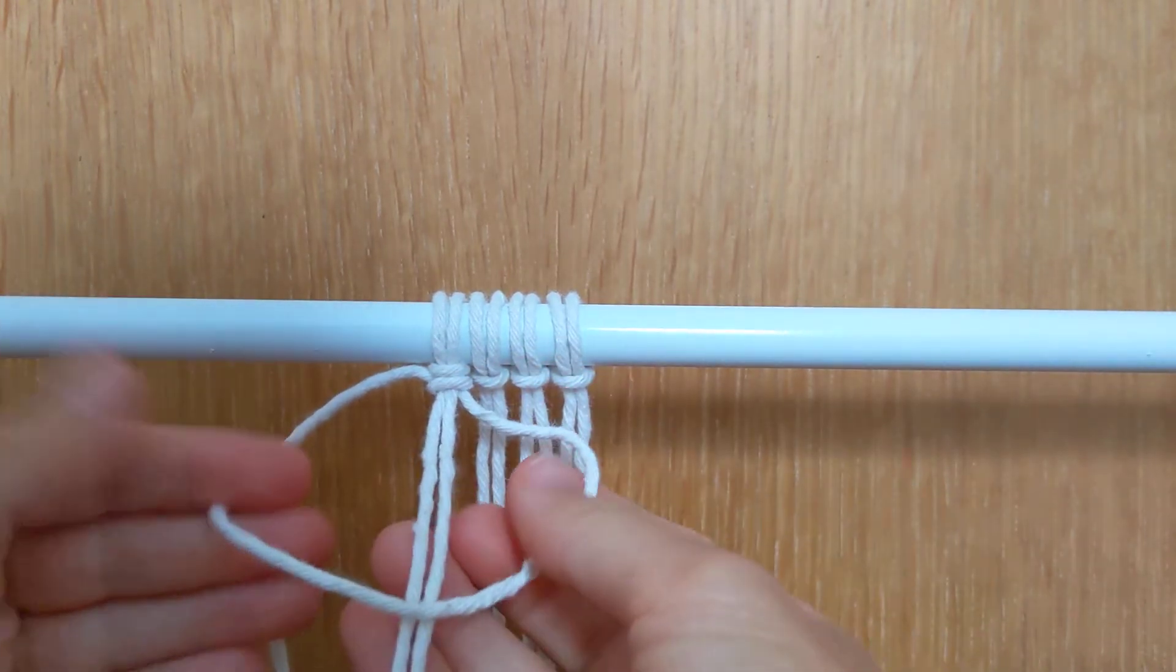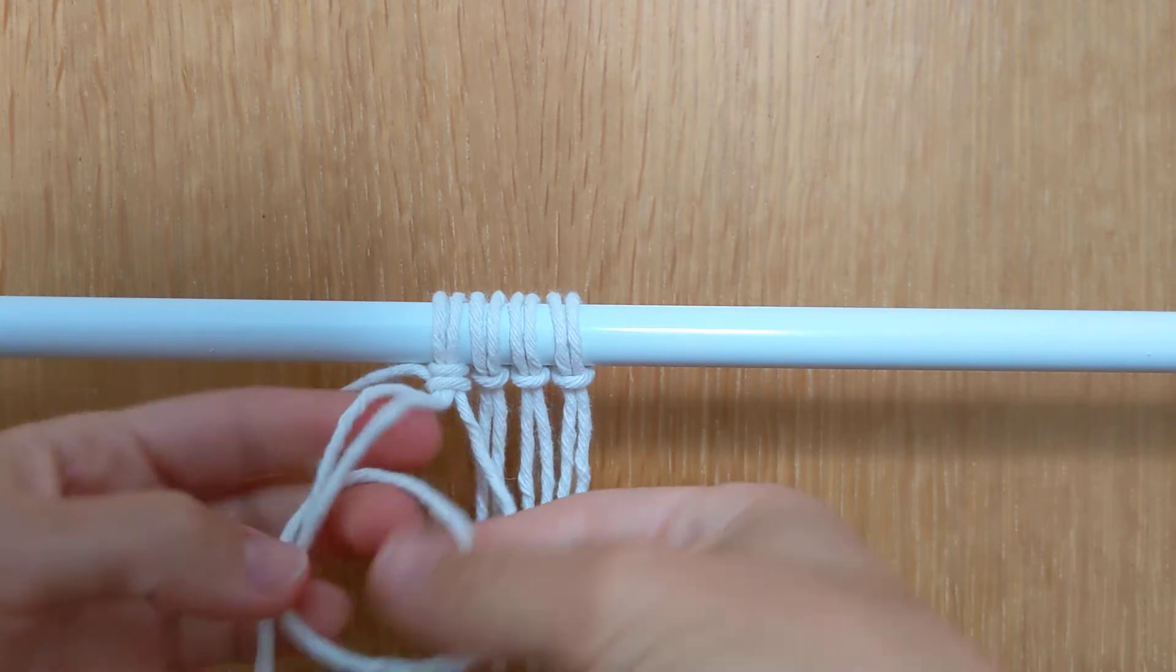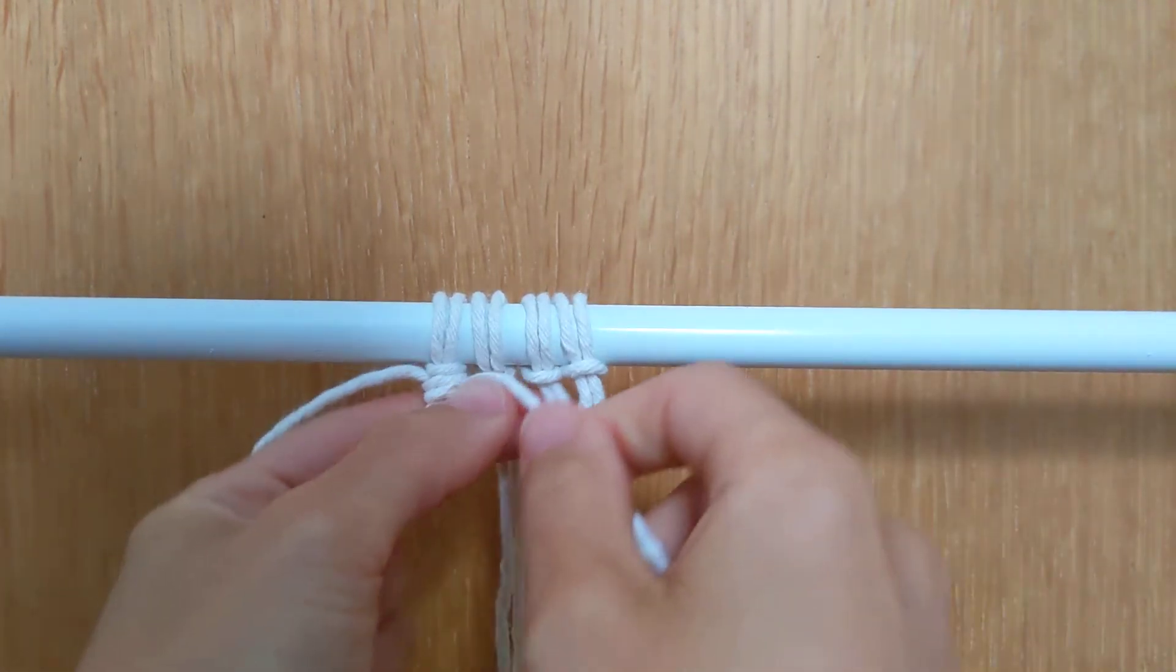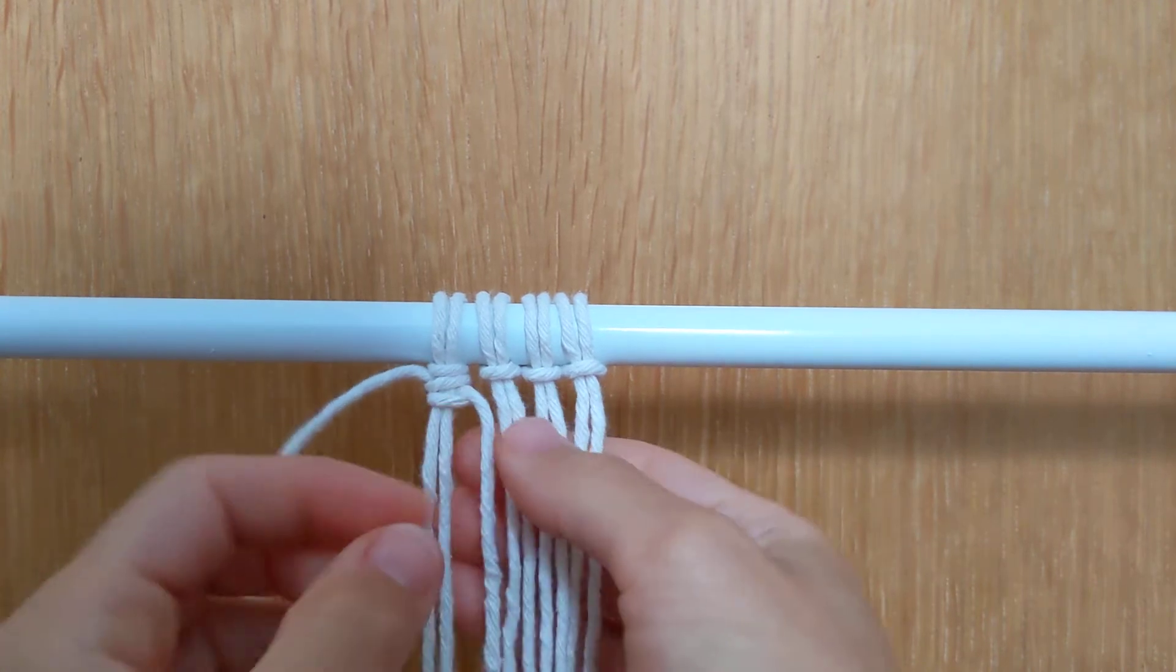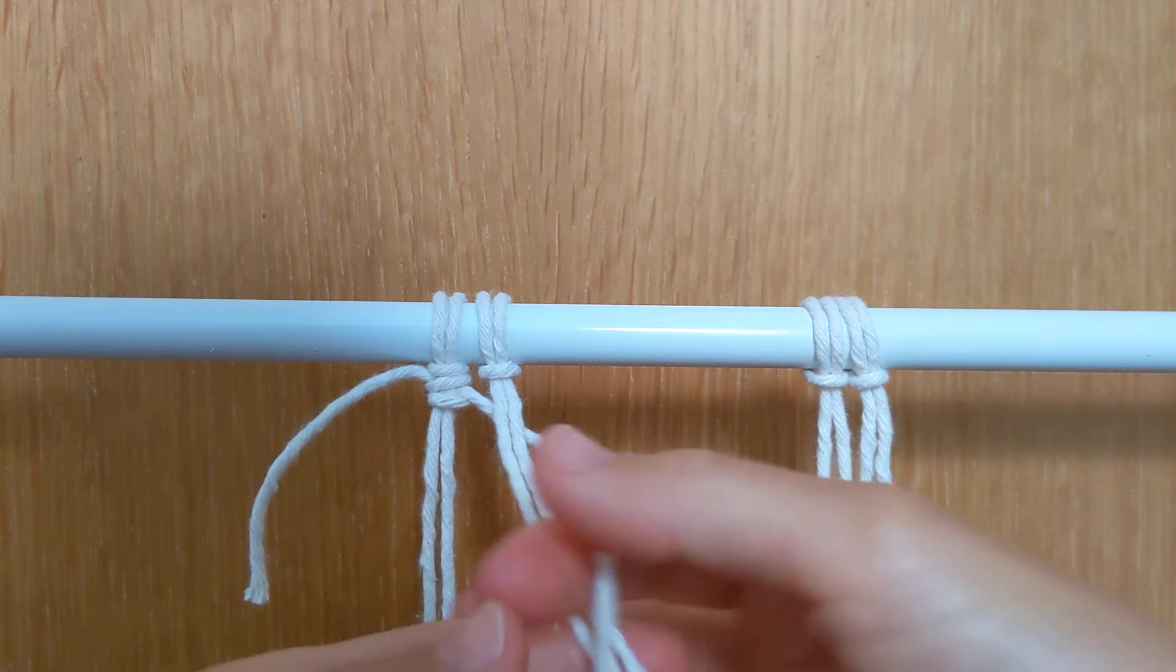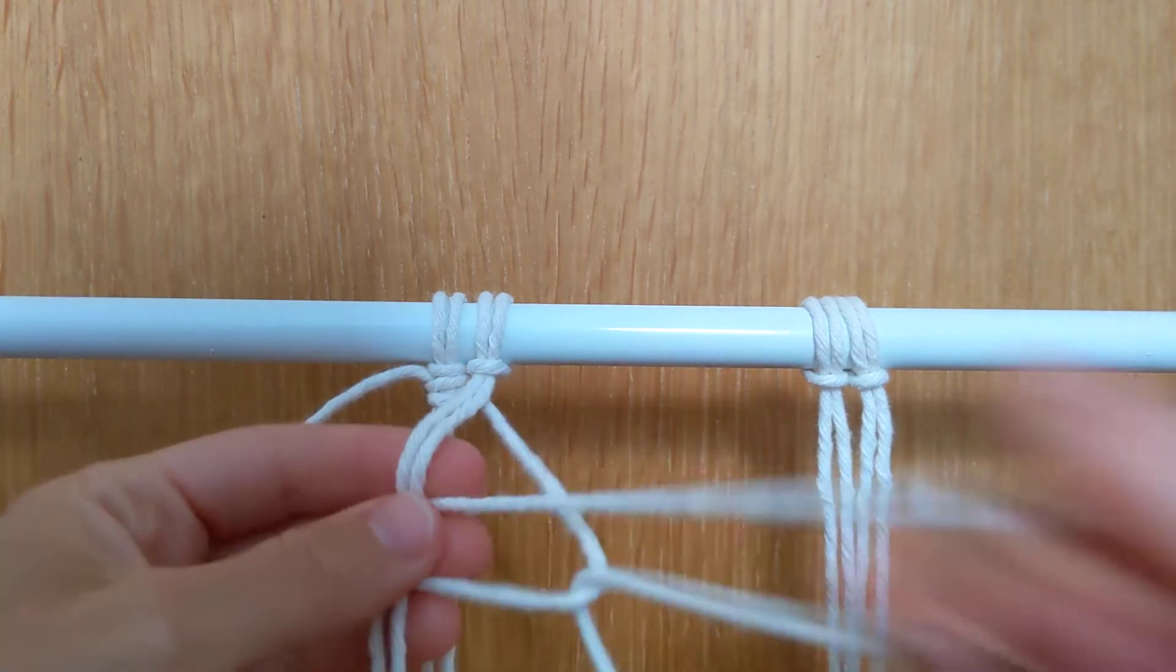Then I'm going to repeat again: round the front, round the back, and through the loop. Now this is where I'm going to show you a tip on how to hide the excess cord. I'll just move those out of the way and go around the back, round the front, and through this loop.